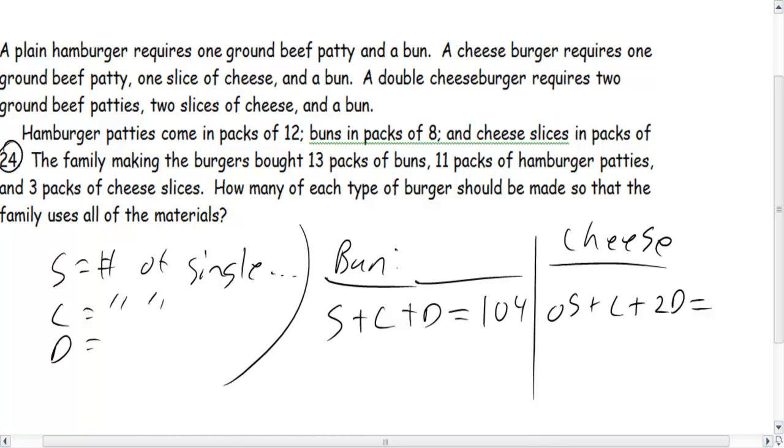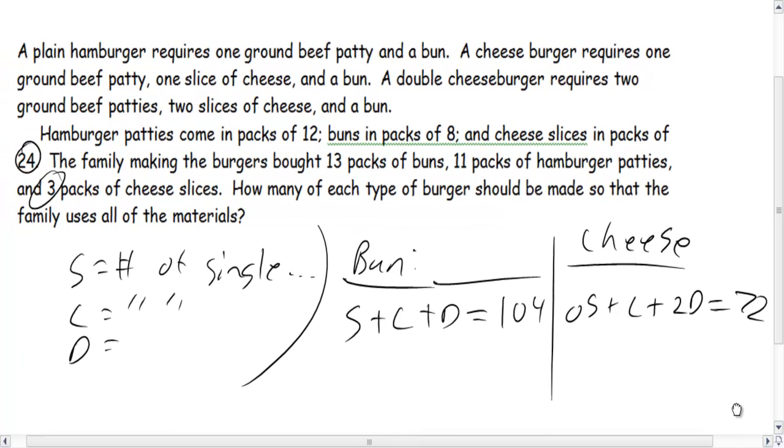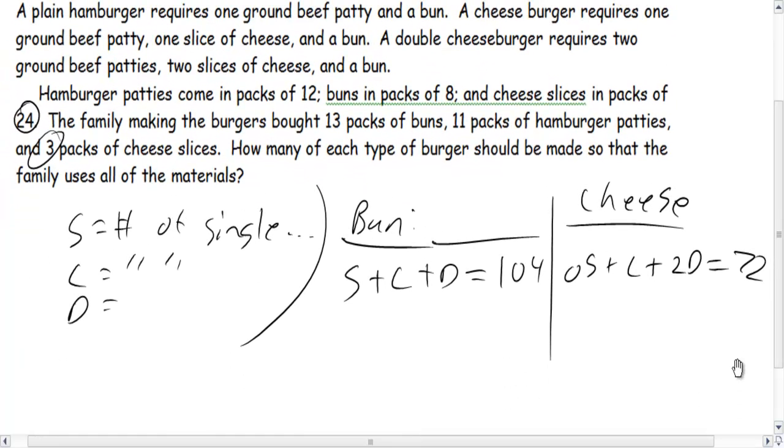All right, so how much cheese is there? And let's see, the family bought—or cheese come in packs of 24 and they bought three packs of cheese, so three times 24, that makes 72 slices of cheese.